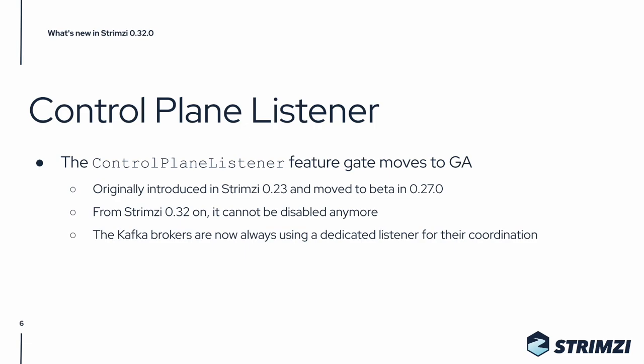Another important change in this release is that the control plane listener feature gate is moving to GA. Originally this feature gate was introduced in Strimzi 0.23 and it moved to the beta phase in Strimzi 0.27. From Strimzi 0.32 it is always enabled and cannot be disabled anymore. That means that all the Kafka brokers in your cluster are now always using a dedicated listener for coordination and the traffic related to it.